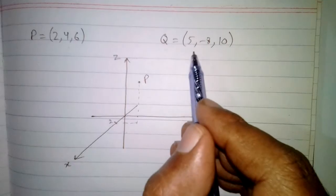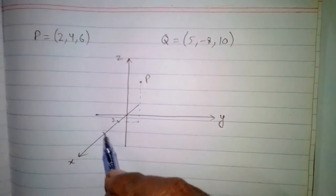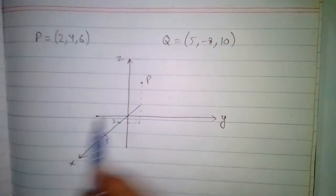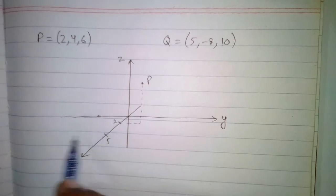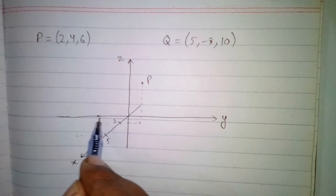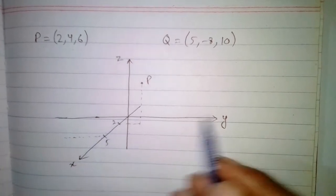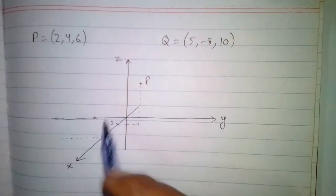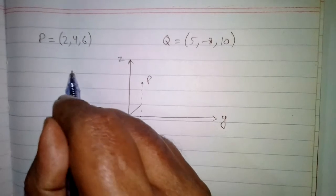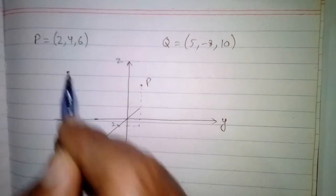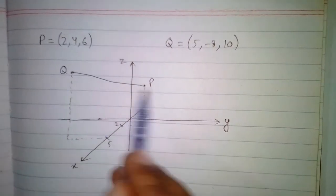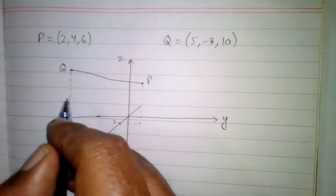The point Q has x-component five, so we will go five units on the x-axis, and minus eight, so we will go eight units parallel to the y-axis in the negative direction, and ten units parallel to the z-axis. So maybe this point is over here. We have to find the distance between P and Q in three dimensional space.